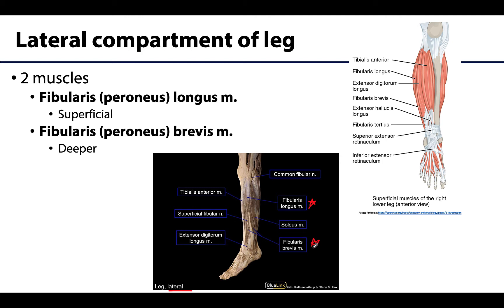Peroneus you see a lot of times replacing the term fibularis. As you can see, you can have muscles of other compartments visible as well — the tibialis anterior and extensor digitorum longus from the anterior compartment, as well as the soleus and gastrocnemius from the posterior compartment. So you just have this relatively small region that makes up the lateral compartment.